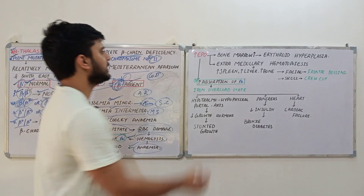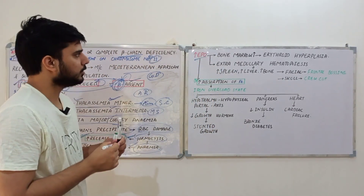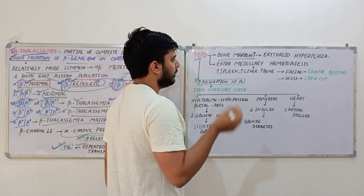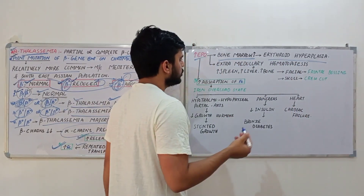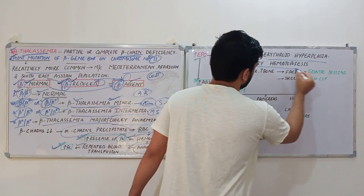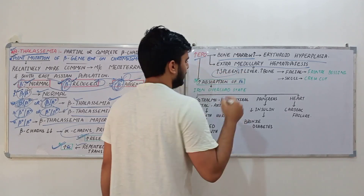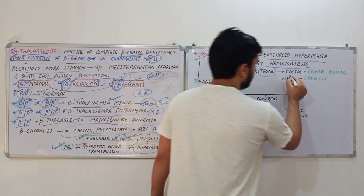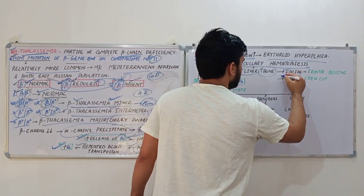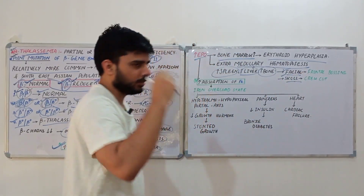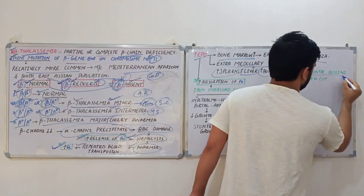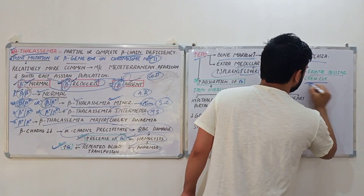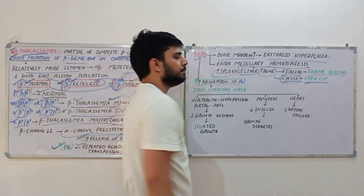In response to anemia, the body synthesizes erythropoietin. Erythropoietin stimulates the bone marrow for synthesis of more blood cells, causing erythroid hyperplasia. It also stimulates extramedullary hematopoiesis in organs such as the spleen, causing splenomegaly, and the liver, causing hepatomegaly. It also stimulates facial bones and skull bones — the frontal bone becomes more prominent causing frontal bossing, and stimulation of the skull gives rise to a crew cut appearance and chipmunk faces.